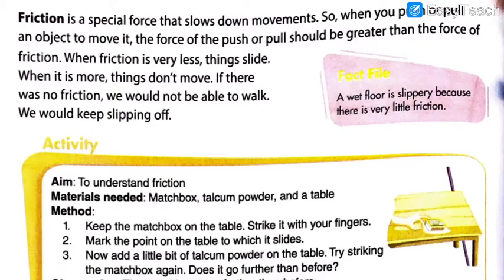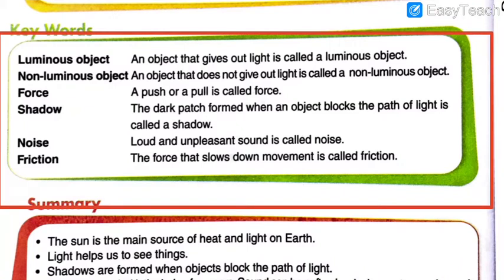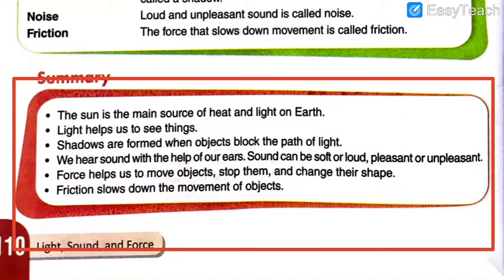You might be able to see the textbook on the screen. This is not the front page — this is what we did in the previous lecture: the keywords. I asked you to write the keywords in the previous lecture when I was reading and explaining it to you. Let's just read out the summary and start solving the objectives. The sun is the main source of heat and light on earth. There are various sources of light on planet earth but the sun is the natural and main source of light and heat.